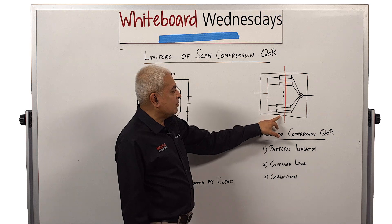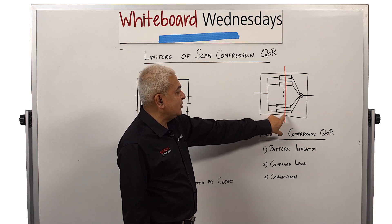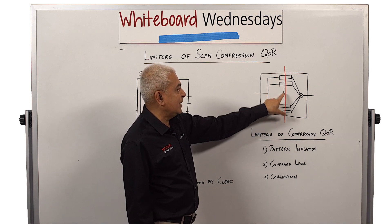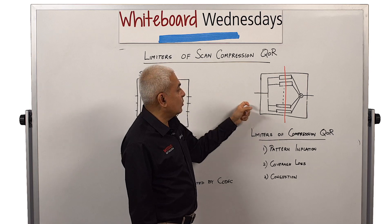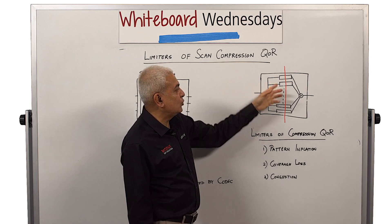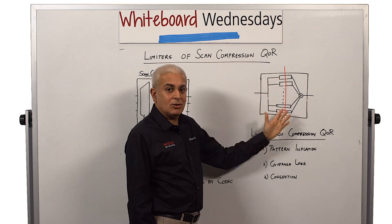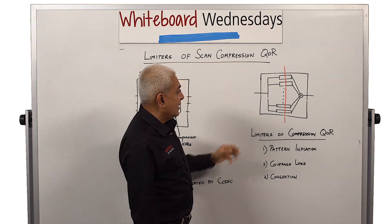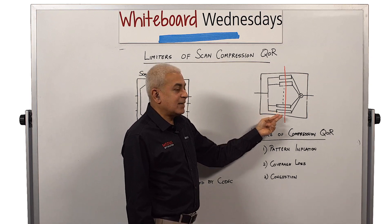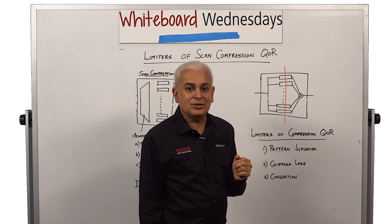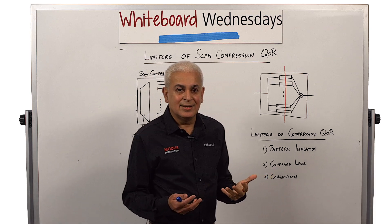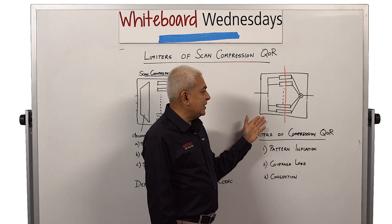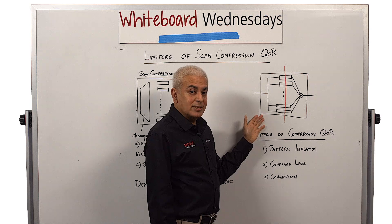Looking at the same problem in a further extreme, if I make these chains shorter and take this example down to one flip-flop length per chain, then I can only apply 2 patterns in this design — all 1s or all 0s — because every chain is only one flip-flop long. It's very easy to see that since I'm only able to apply 2 patterns in this entire design, I'll not be able to generate all the possibilities needed to get good fault coverage. So there will be coverage loss. As we increase the amount of compression we ask for, you will see coverage loss.